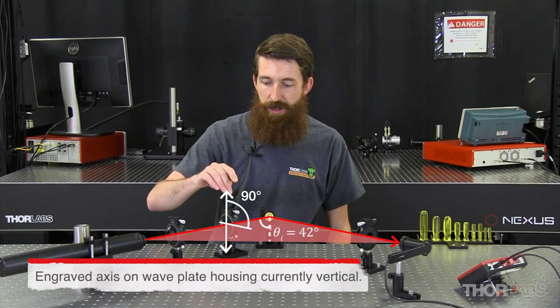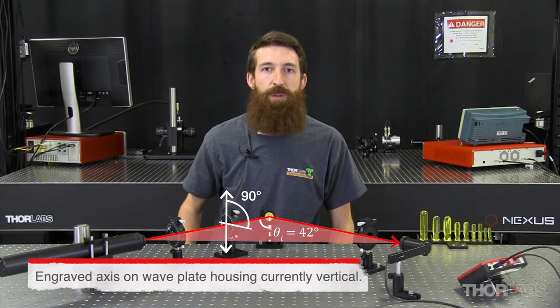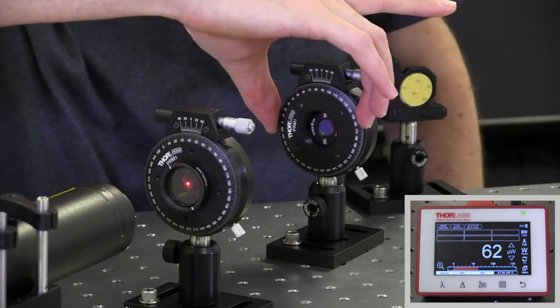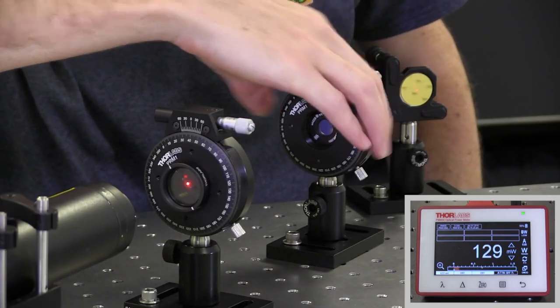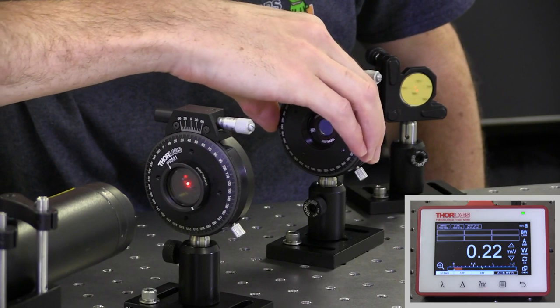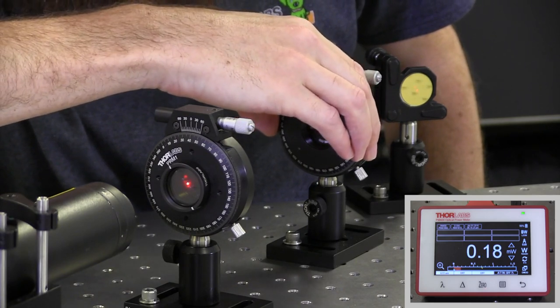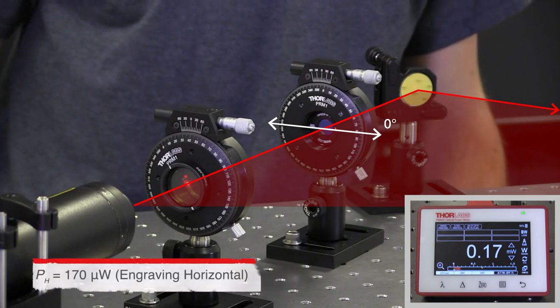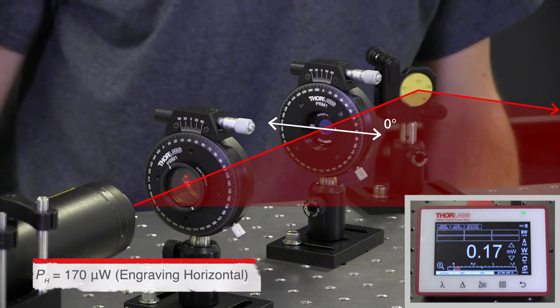So I'll take my first measurement, where I have one axis horizontal and one axis vertical, and I get a relatively low power measurement. I then rotate my wave plate by 90 degrees to align the other axis. Take another power measurement, and I see that I have a relatively high amount of power.